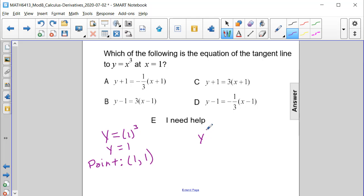So y prime of x cubed is equal to 3x squared. And if we evaluate y prime at 1, we get 3 times 1 squared, which is 3. So that is the slope of our tangent line.